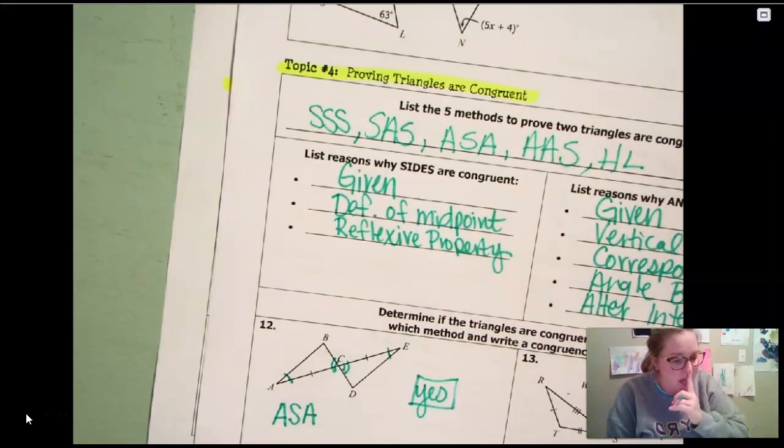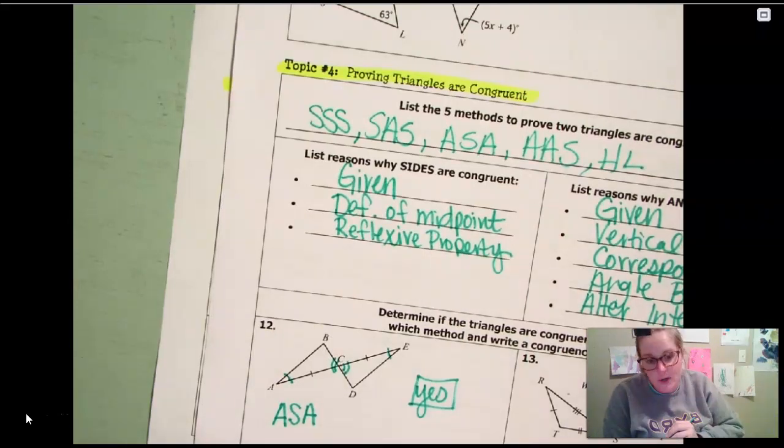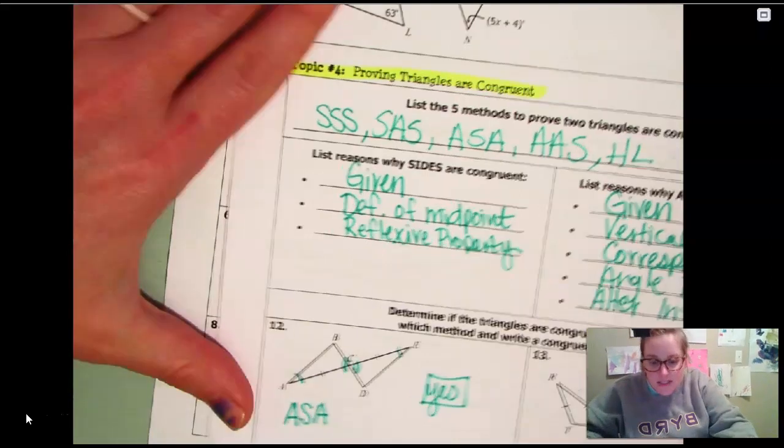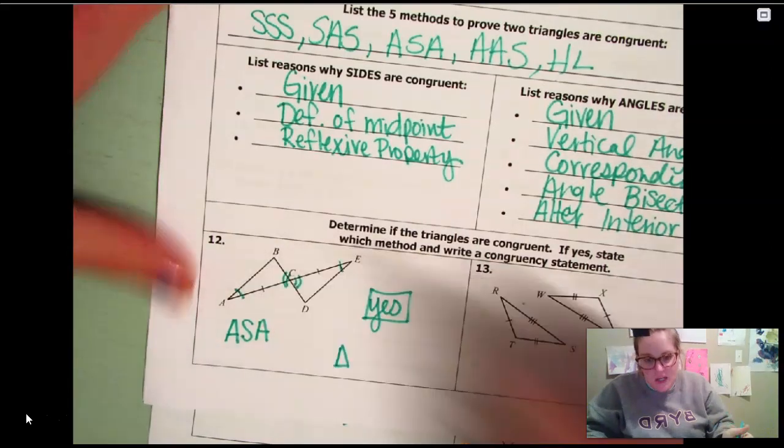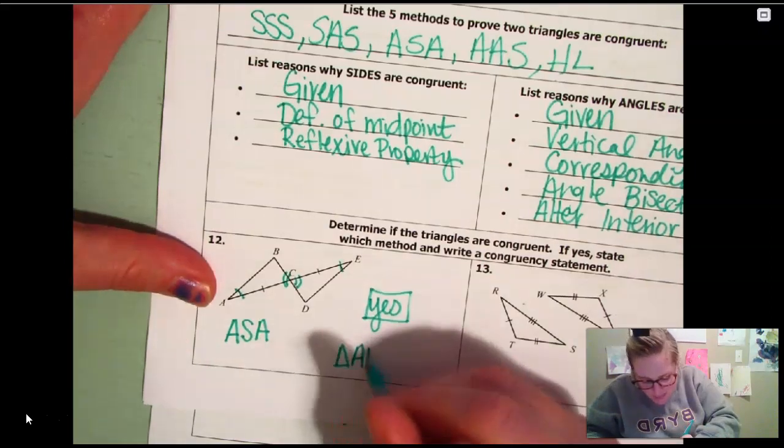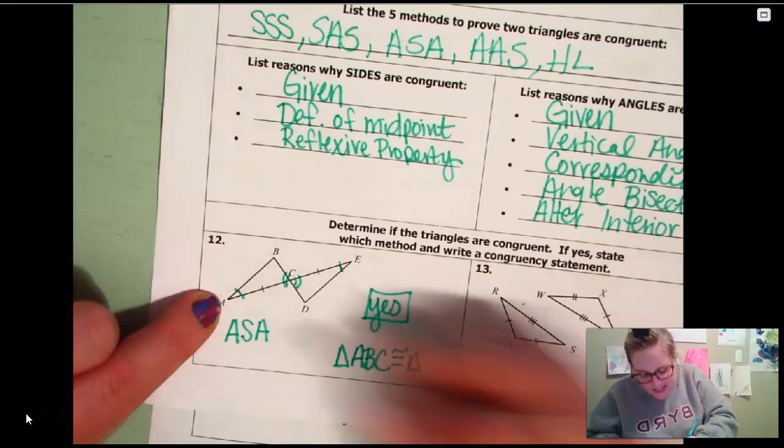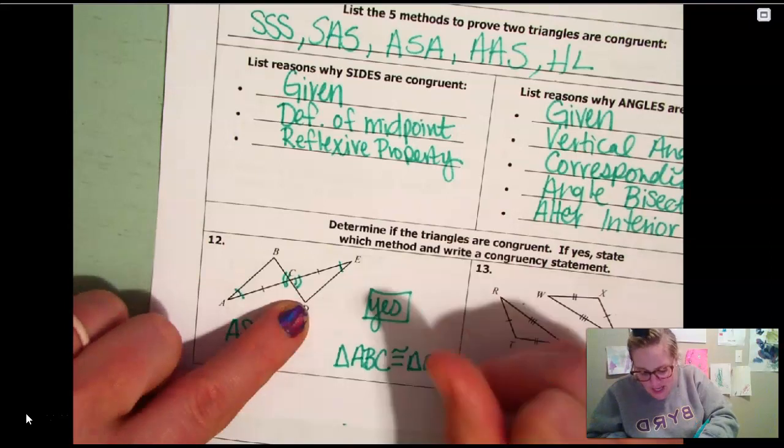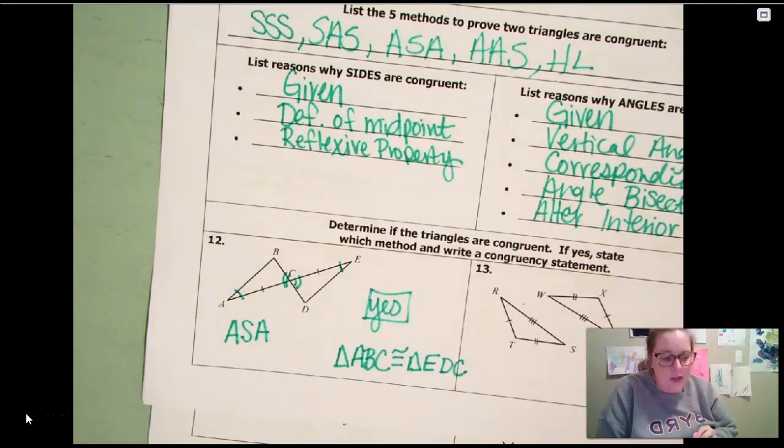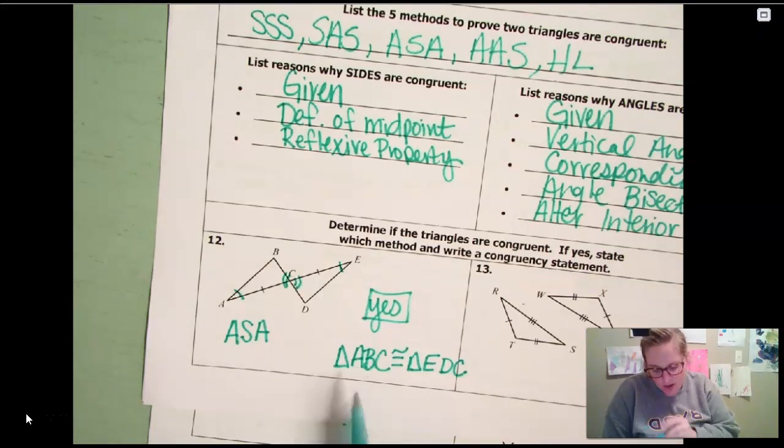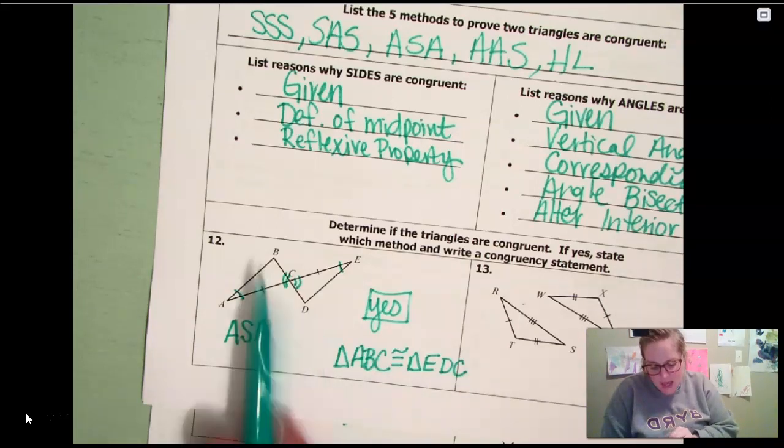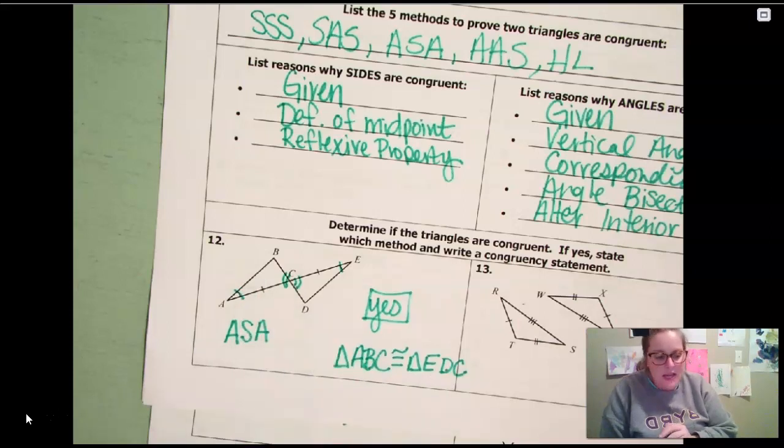And then it also wants you to state the congruency statement. Well, when you state a congruency statement, that's just when you're going to state the congruent parts. So I'm going to say A, B, C is congruent to A is like E, and then D, and then C. So that would be my congruency statement. And so that is what you are doing for each of those. Because C is going to be with C, D and B are alike, and then E and A are alike. So you're wanting to match those with each other.